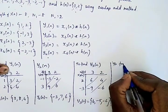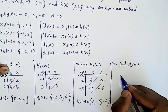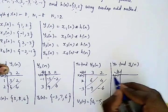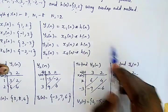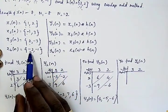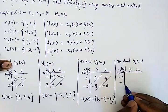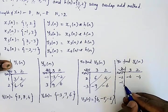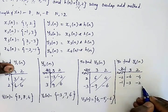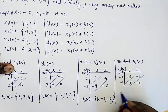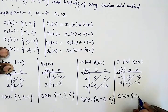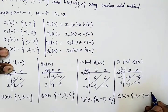Finally, we find y4[n] = x4[n] convolved with h[n]. Here h[n] = {3, 2} and x4[n] = {-2, -1}. Multiplying: -2 times h[n] gives {-6, -4}, and -1 times h[n] gives {-3, -2}. Adding diagonally, y4[n] = {-6, -7, -2}.